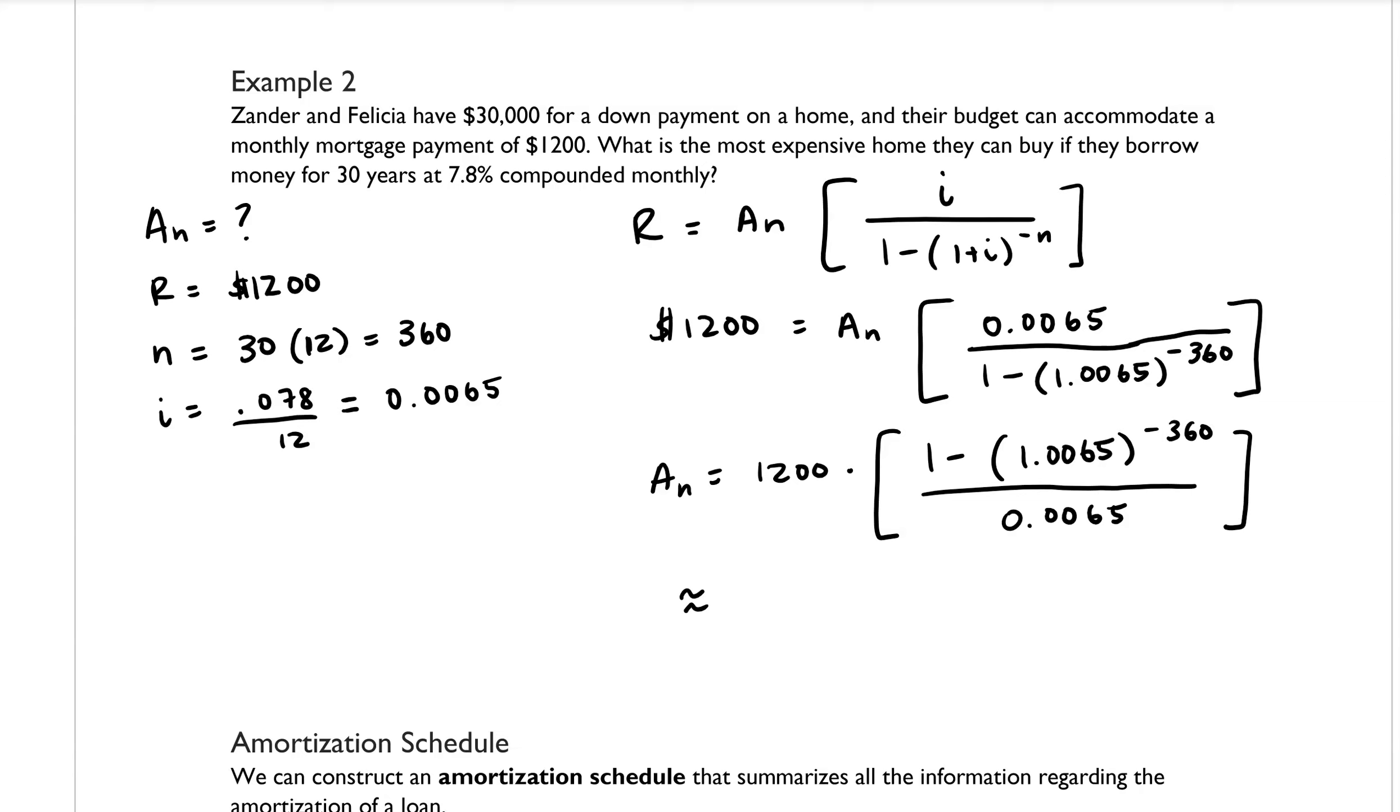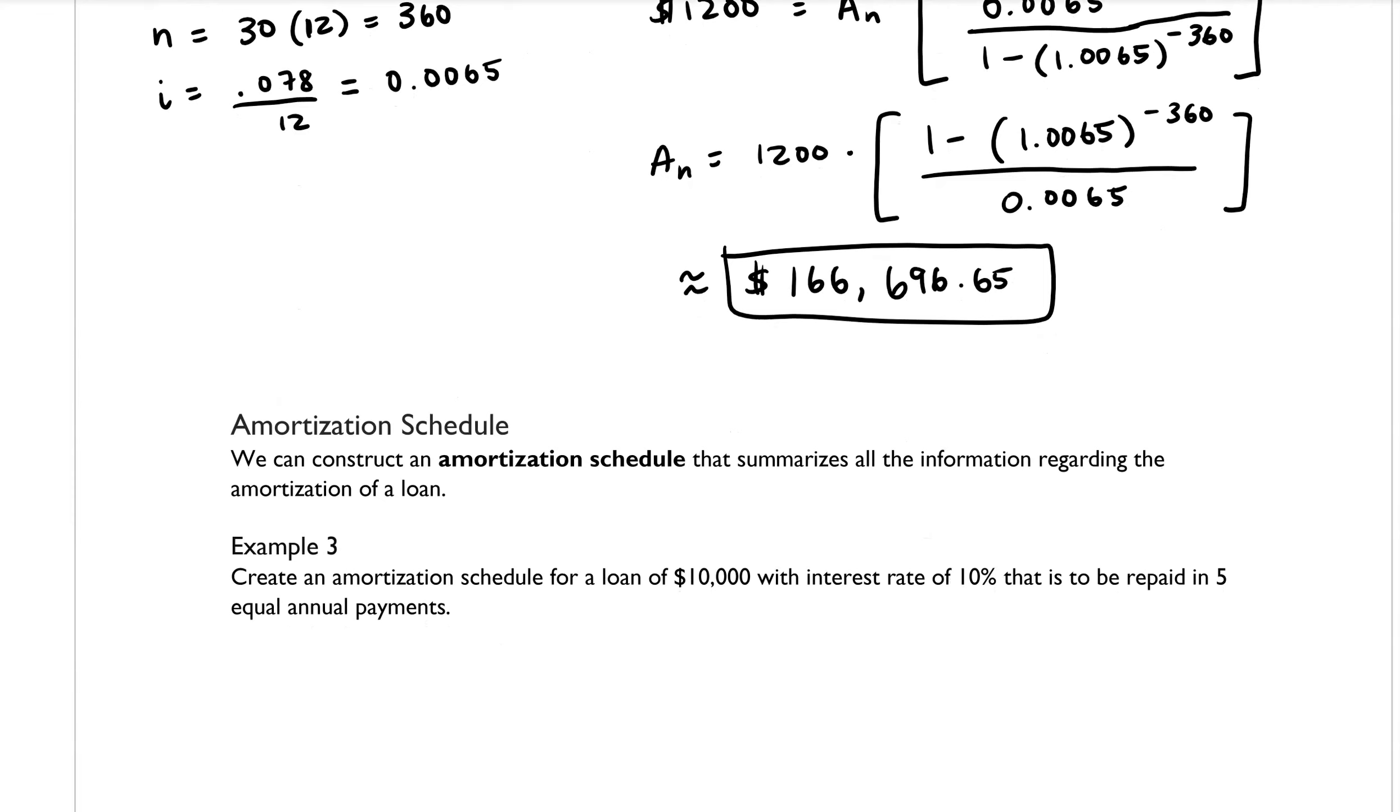you will find that A sub N is approximately $166,696.65, which if Xander and Felicia live in the Seattle area, will basically get them a cardboard box. So let me just write that. This represents the max cost of a home they can afford.